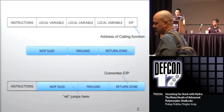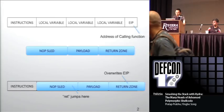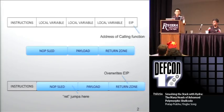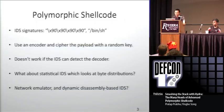Just keep in mind what the three default zones look like for a regular shellcode: no-op sled, payload, return zone. Hydra basically obfuscates all of these sections and adds more.